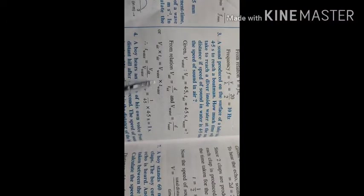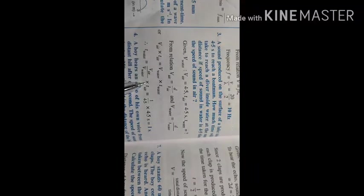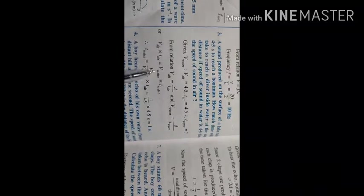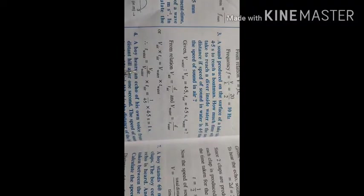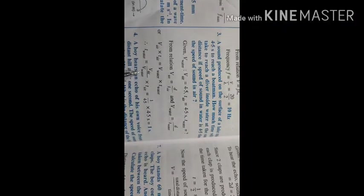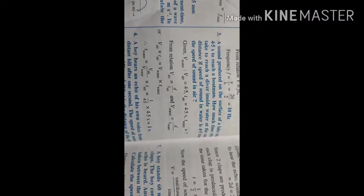Since distance is the same: distance = v_air × t_air = v_water × t_water. From there we can write t_water = (v_air / v_water) × t_air. Since v_water / v_air = 4.5, then v_air / v_water = 1/4.5. So finally we get t_water = 1 second.